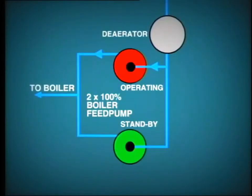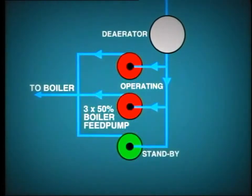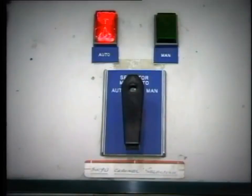In many power plants, two boiler feedwater pumps may be installed, providing 100% standby. An alternative to this arrangement is to provide three 50% pumps. The standby pump may be made available for automatic start in case of failure of the running pump and a decrease in feedwater pressure.